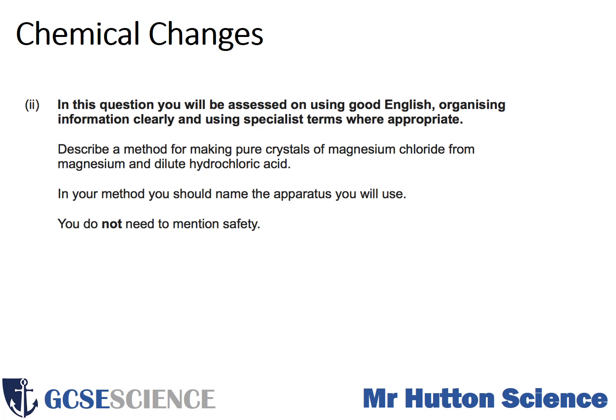This is an extended answer question, so you will be assessed on using good English and your spelling, punctuation and grammar. Describe a method for making pure crystals of magnesium chloride from magnesium and dilute hydrochloric acid. In your method, you should name the apparatus you will use. You do not need to mention safety. With these questions, students regularly get carried away and just regurgitate what they've done from a required practical.